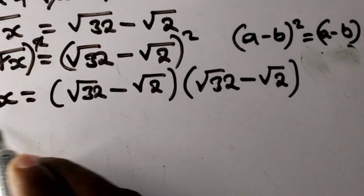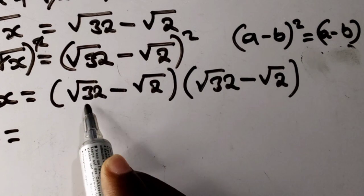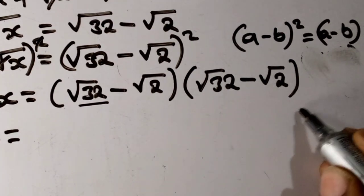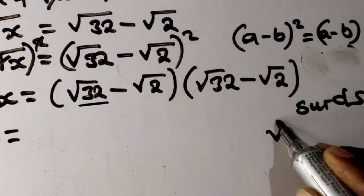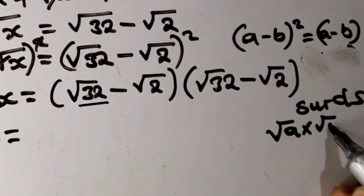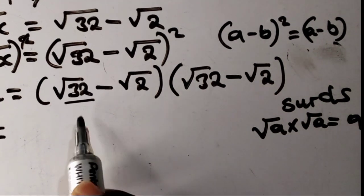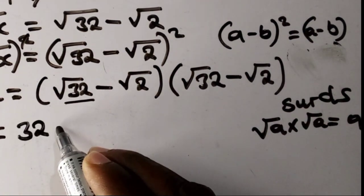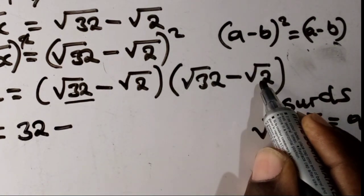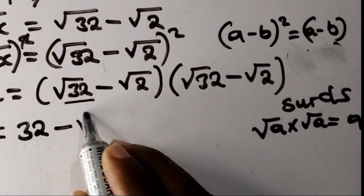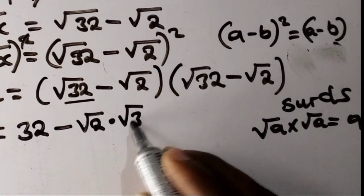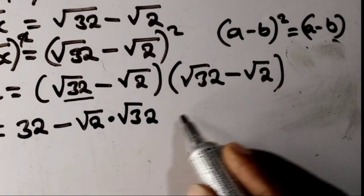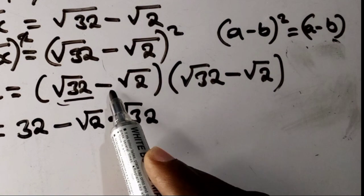Now x equals — we know that root a multiplied by root a equals a. So root 32 multiplied by root 32 gives us 32. Then minus root 32 multiplied by root 2, which gives root 64. Then minus root 2 multiplied by root 32, which also gives root 64.